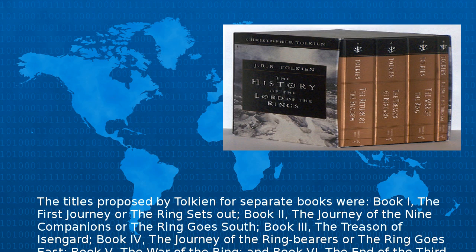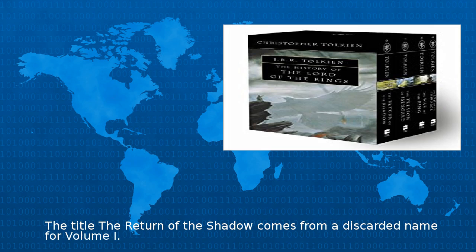Book 1, The First Journey or The Ring Sets Out; Book 2, The Journey of the Nine Companions or The Ring Goes South; Book 3, The Treason of Isengard; Book IV, The Journey of the Ring-Bearers or The Ring Goes East; Book V, The War of the Ring; and Book VI, The End of the Third Age. The title The Return of the Shadow comes from a discarded name for volume I.